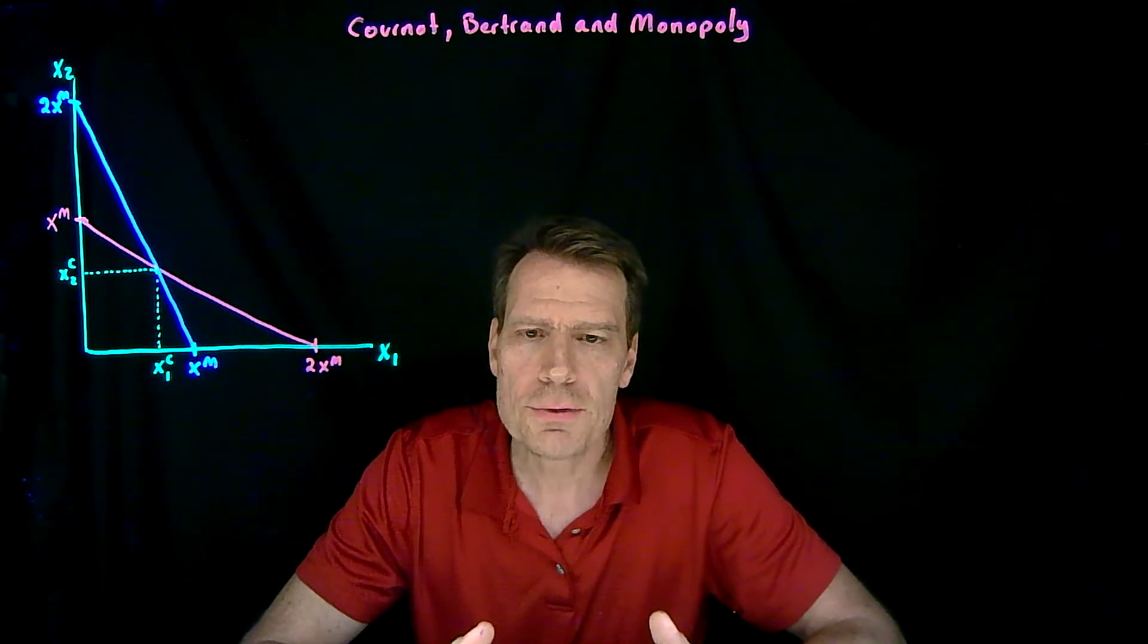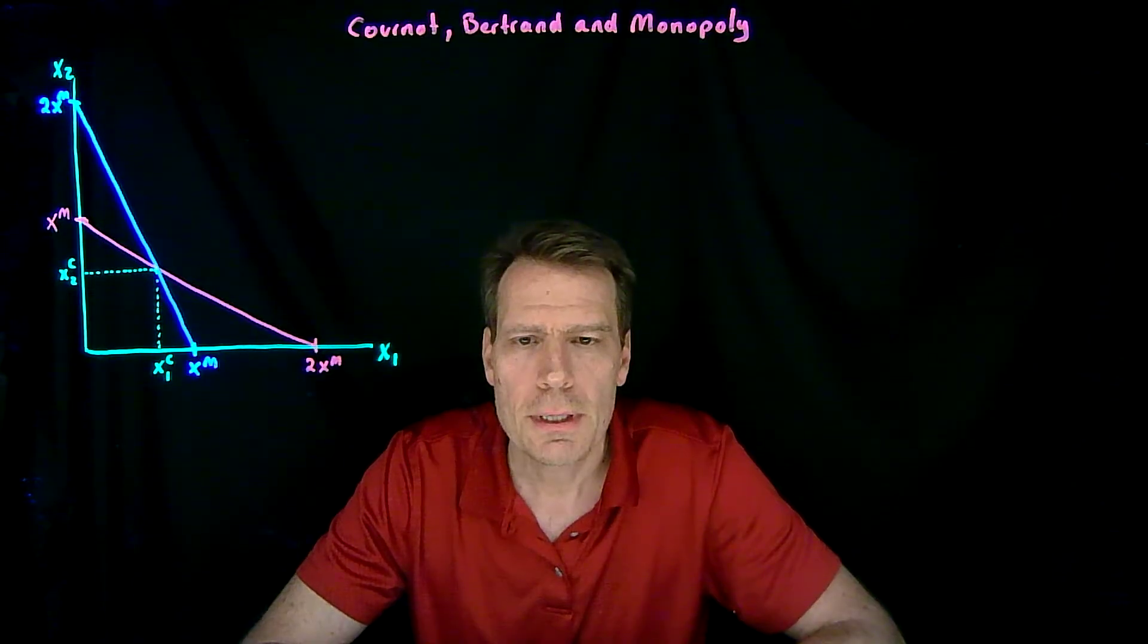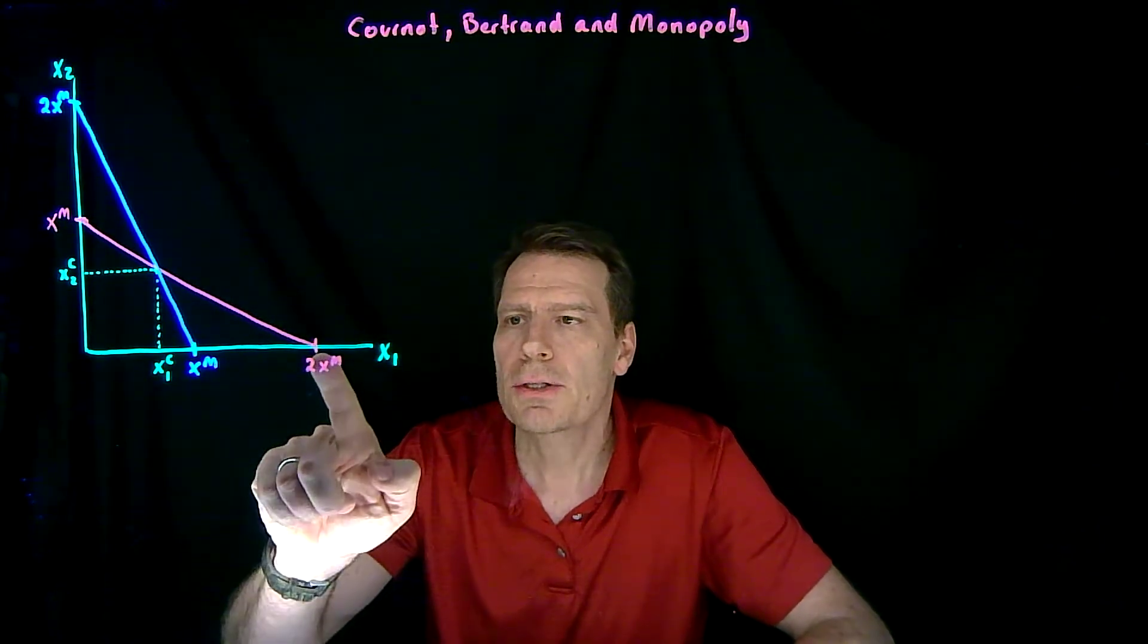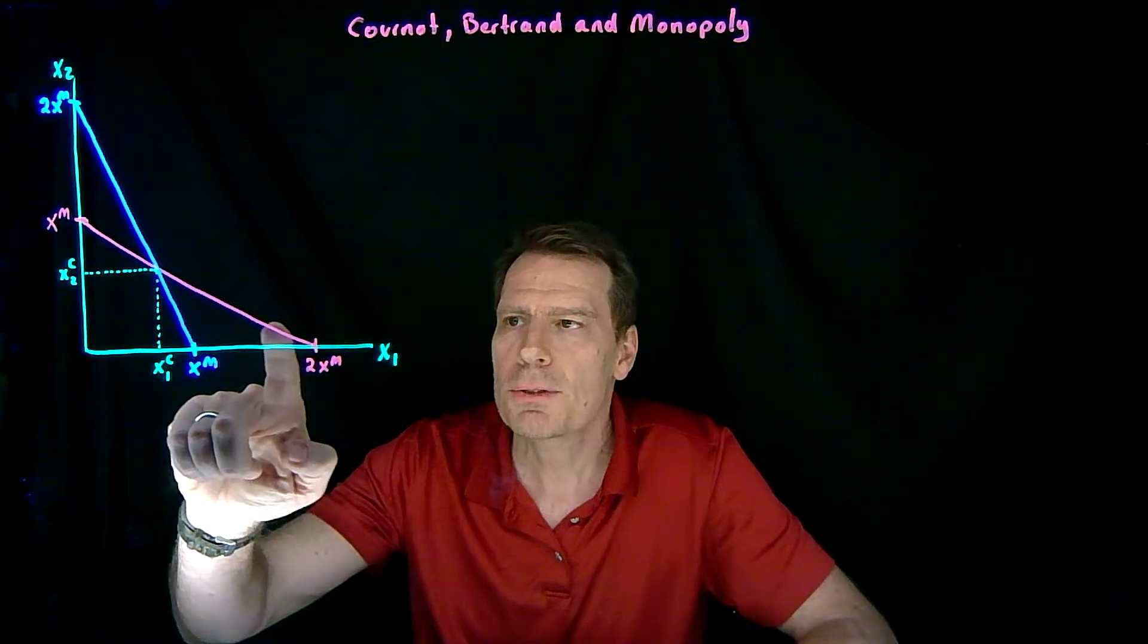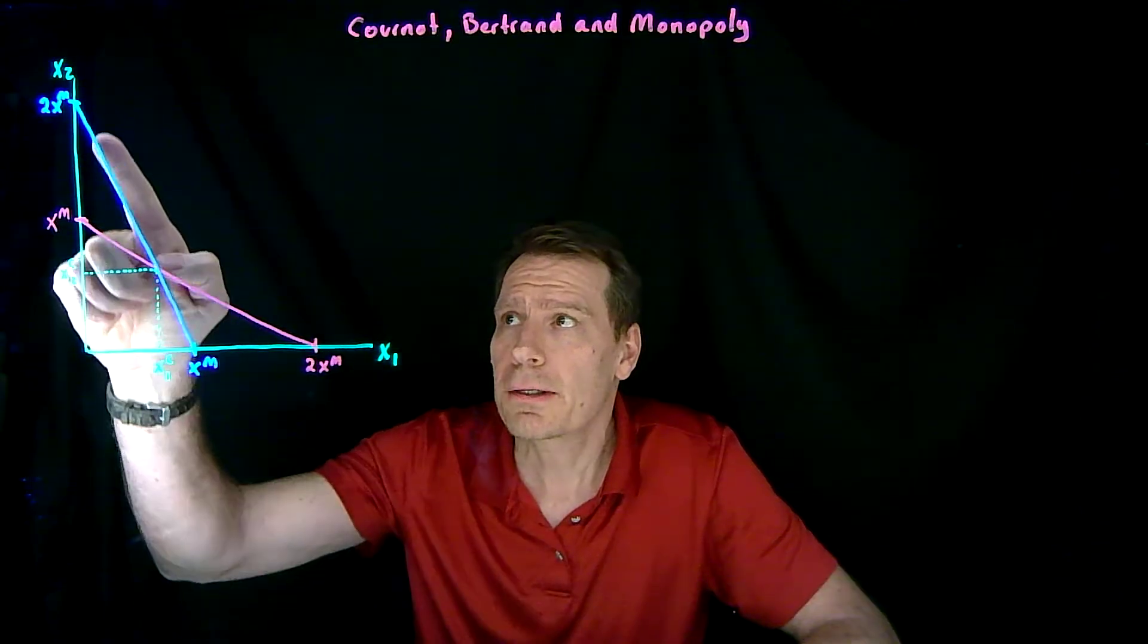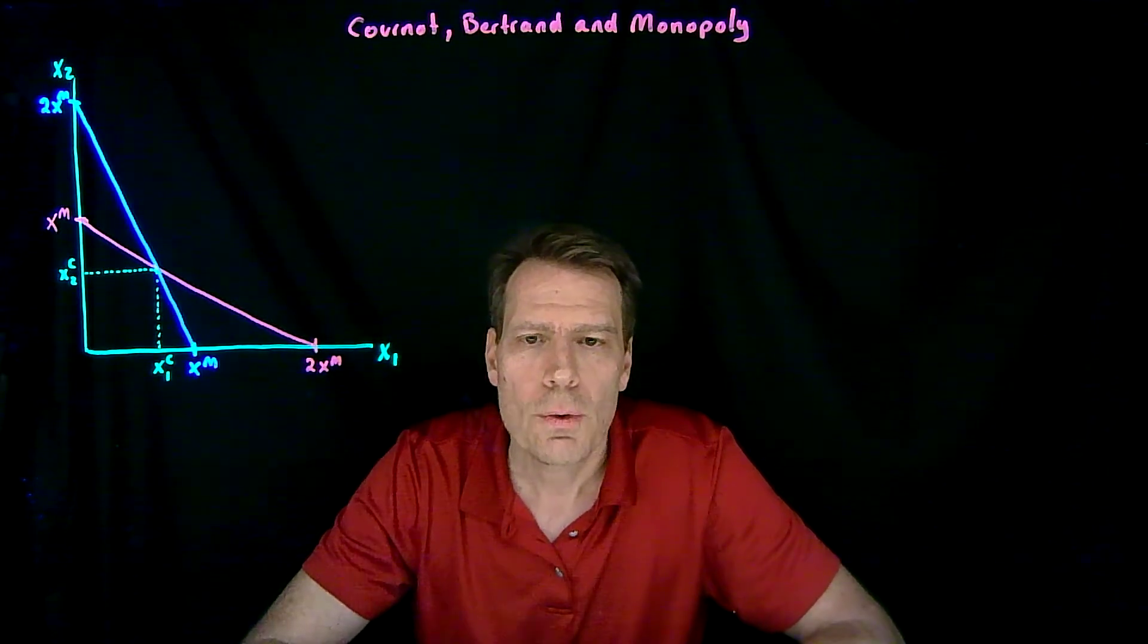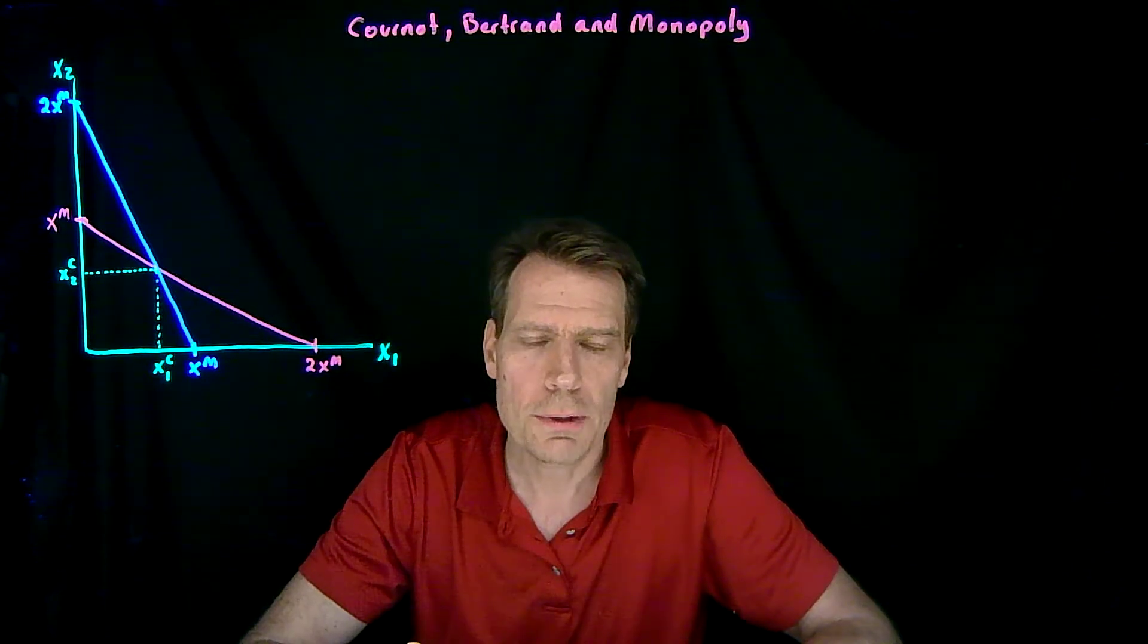We've now derived the Cournot best response functions, the best response functions for two firms that set their quantity and then sell that quantity at whatever price they can get. Firm 2 calculates for every level of x1 what its best response for x2 will be. Similarly, firm 1 calculates for every quantity of x2 what its best response for x1 will be. Where those two best response functions intersect is where the Cournot-Nash equilibrium lies.